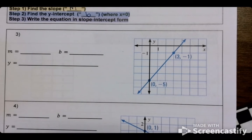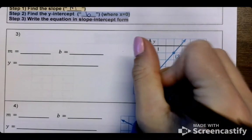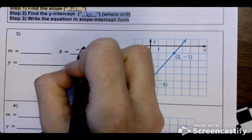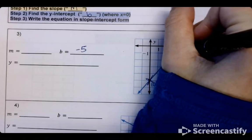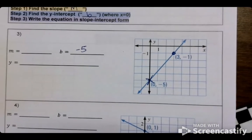So let's start with the easy one. Where is our y-intercept? Right here. So b is negative 5. Where is our other point? Right here. So connect those and find your slope.